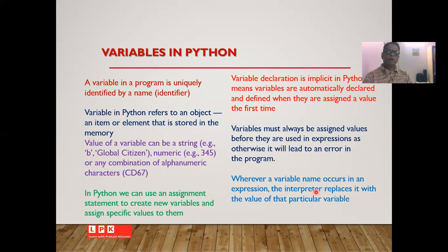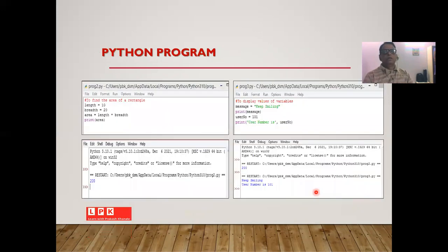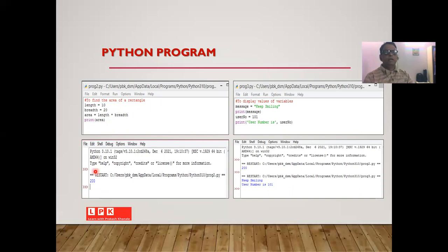Variables are frequently needed by the programmer whenever we write any kind of program. For example, in a small program using two variables: length = 10, breadth = 20, and then area = length * breadth. When you execute such a program you will print the value of area using print(area), and the output will be area = 200.